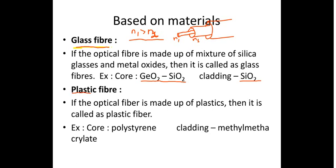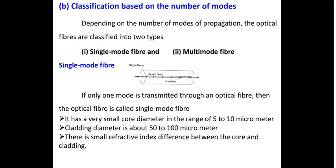For plastic fiber, we can also prepare optical fiber. An example is: the core is made up of polystyrene and the cladding is made up of methyl methacrylate. Some more materials are also available for use. This completes the classification based on materials.